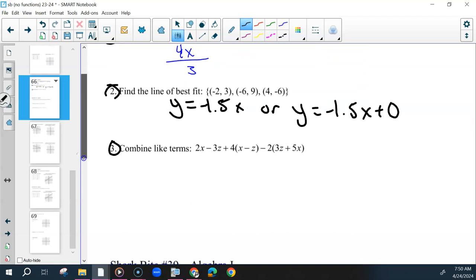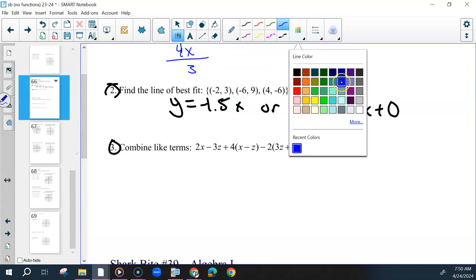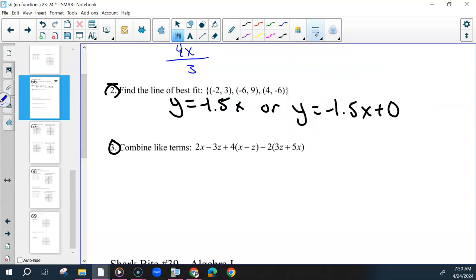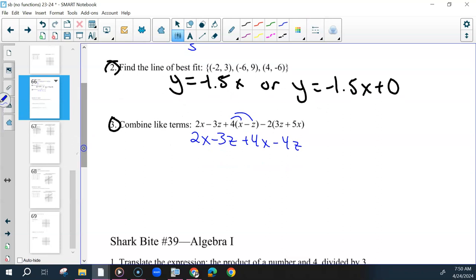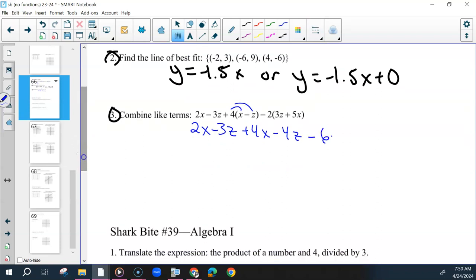And then to combine like terms, we need to distribute. We have 2x minus 3z plus 4x minus 4z minus 6z minus 10x. And then combine all of your x's, so this would be 6 minus 10 is negative 4x.